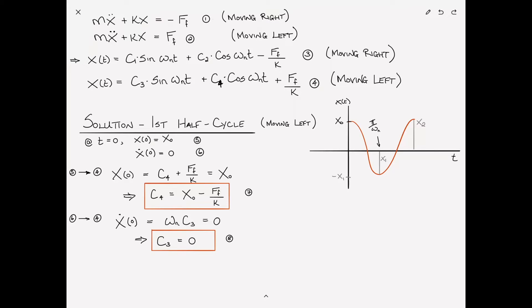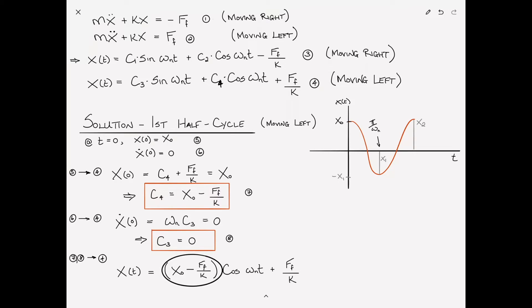Plugging equations seven and eight back into equation four gives the response for the first half cycle — equation nine: X(T) equals (X sub zero minus F sub F over K) cosine omega_n T plus F sub F over K.